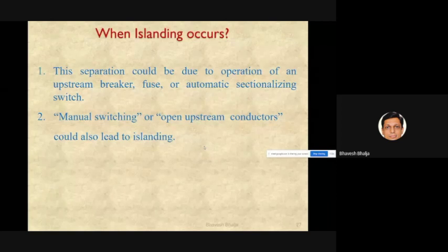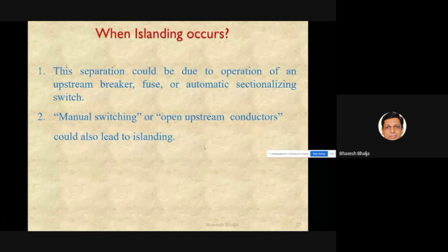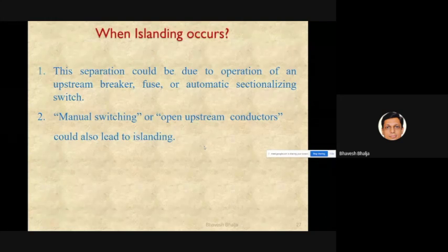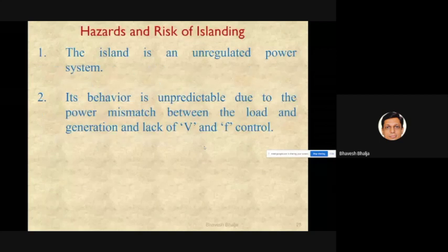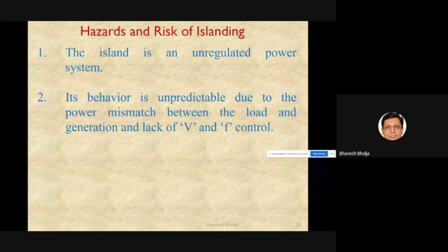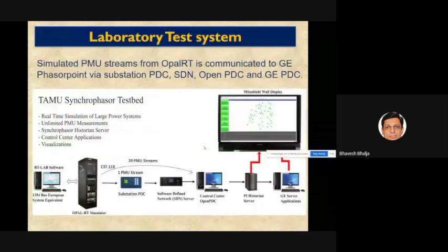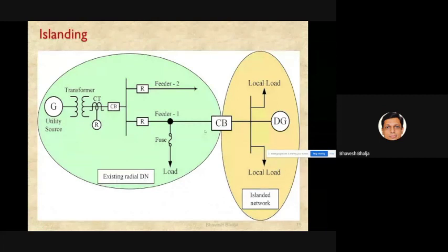Islanding occurs due to: (1) switching of circuit breakers, either manual or automatic; or (2) operation of sectionalizing switches or reclosers. The main hazards and risks of islanding include: when a circuit breaker opens and an island is formed, that island acts as an unregulated power system network — voltage and frequency are no longer under utility control.